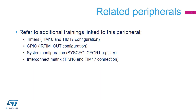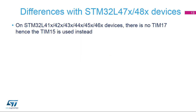The listed peripherals influence infrared timer behavior. Please refer to the additional peripheral trainings for complete information. This slide presents the key differences between baseline STM32L47X and 48X devices and other devices. TIM15 is used instead of TIM17 in STM32L41X, 42X, 43X, 44X, 45X, and 46X devices.